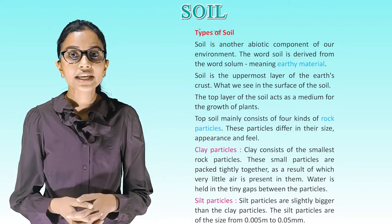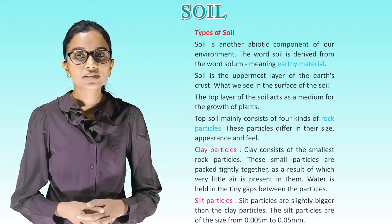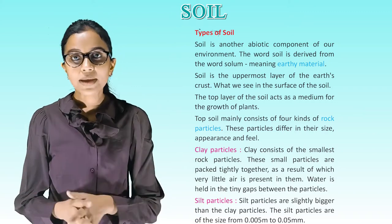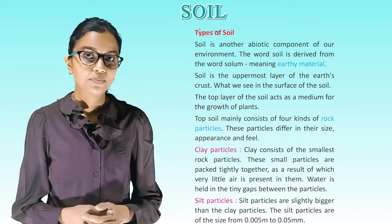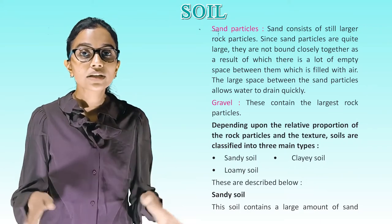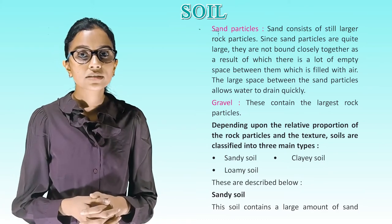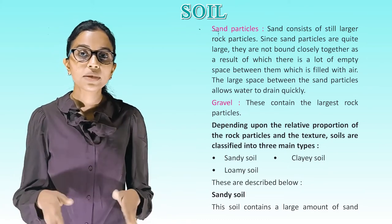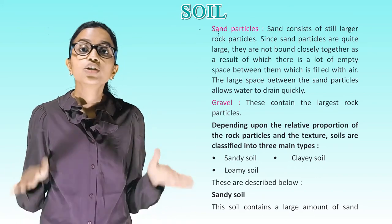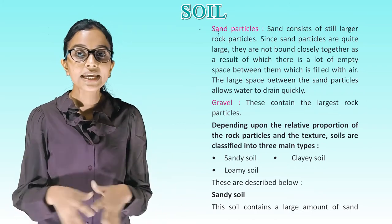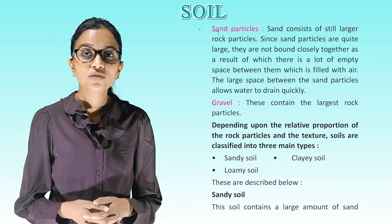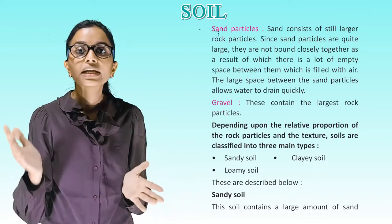Water is held in the tiny gaps between clay particles. Silt particles are slightly bigger than clay particles, ranging in size from 0.005 mm to 0.05 mm. Sand consists of still larger rock particles; since the particles are quite large, they are not bound closely together, so there are many empty spaces between them filled with air. Gravel contains the largest rock particles. Depending upon the relative proportion of rock particles and texture, soils are classified into three main types: sandy soil, clay soil and loamy soil.